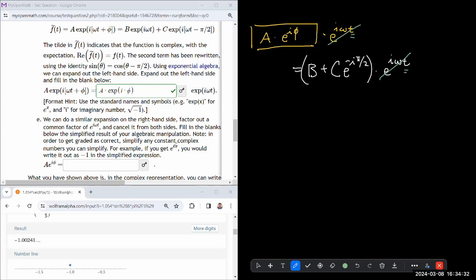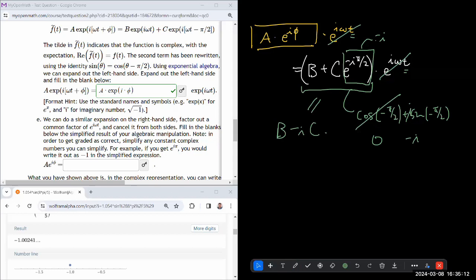So you can cancel it out. Then you have A e to the i phi equals that. Using Euler's formula, that's cosine of minus pi over 2 plus i sine of minus pi over 2. Pi over 2 is 90 degrees, so that's zero, there's an i here, i times that, that's minus i. So this should be rewritten as minus i, meaning this entire thing is equal to b minus i times c. So A times e to the i phi equals b minus i times c.